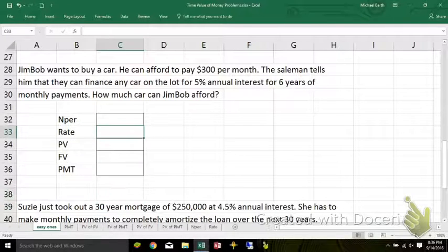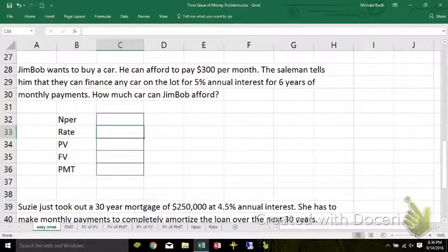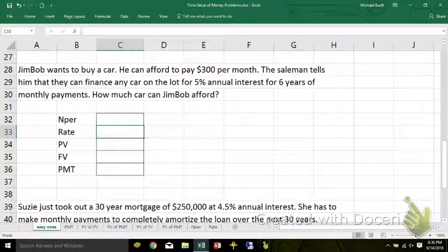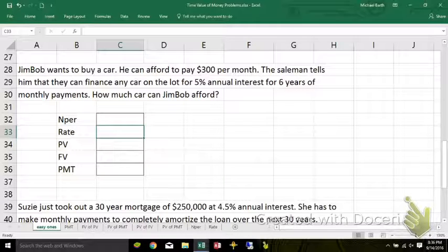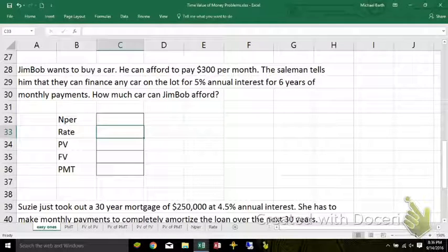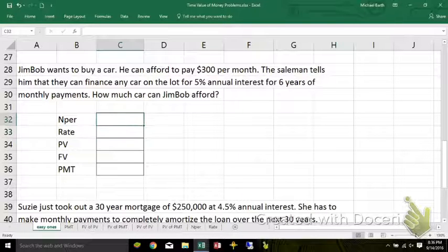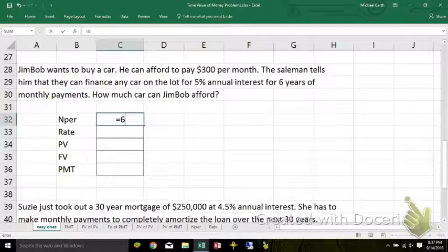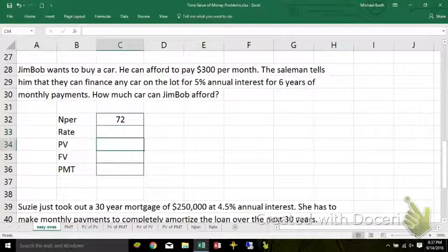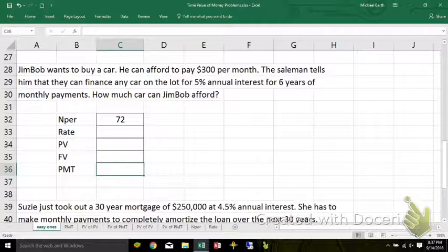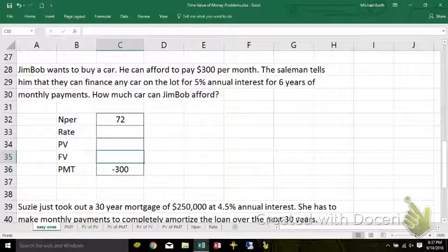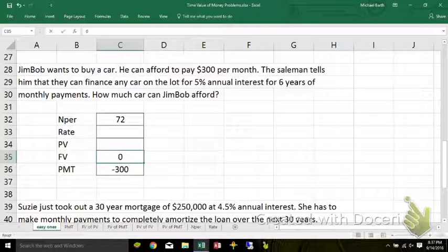Jim Bob wants to buy a car. He can afford to pay $300 a month. The salesman tells him that they can finance any car on the lot at 5% interest for six years of monthly payments. How much car can Jim Bob afford? How much money can he have today in exchange for 72 payments? That's monthly for six years. So that's six years of monthly payments. And each of the monthly payments out of his pocket would be $300. At the end of that period, he won't owe anything else on the car.